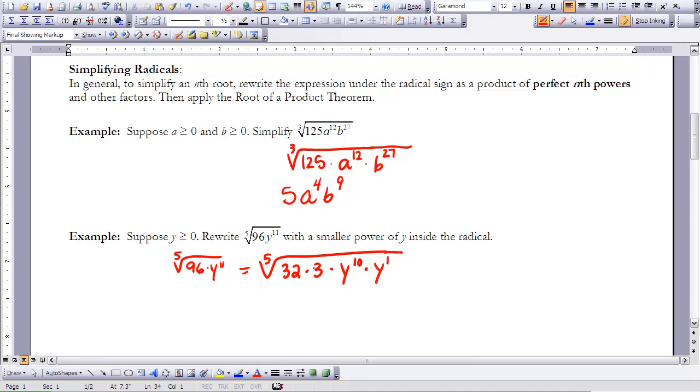So the fifth root of 32 is 2, and the fifth root of y to the 10th is y squared. That leaves me with 2y squared times the fifth root of 3y. So that's one way to simplify our radicals.